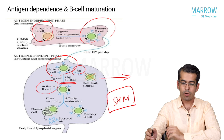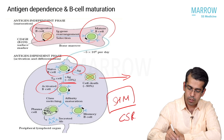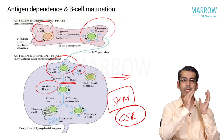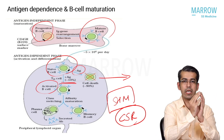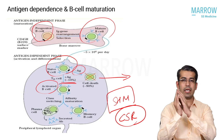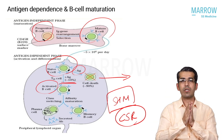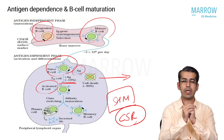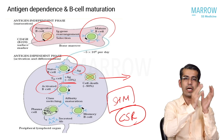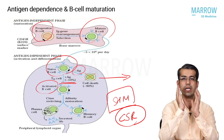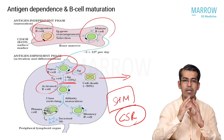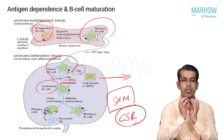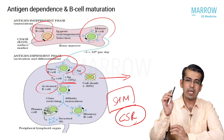After somatic hypermutation there is a phenomenon called class switch recombination (CSR). Normally B cells can express IgM, IgD, IgA, IgE, and all immunoglobulins. But after class switch recombination, a plasma cell will express only one immunoglobulin - either IgM, IgA, IgD, IgE, or IgG. That process of becoming specific for a single immunoglobulin is called class switch recombination.